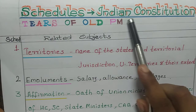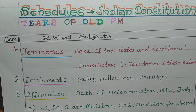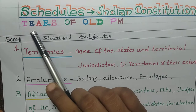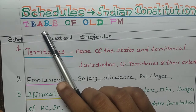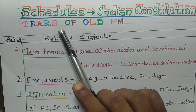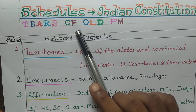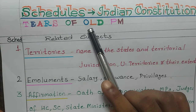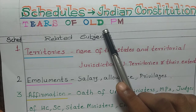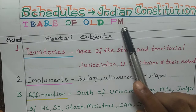Schedules of Indian constitution. Here is our quote: 'Tears of Old PM.' T indicates territories, E emoluments, A affirmation, R Rajya Sabha, S scheduled areas, O other areas, F federal system, O official languages, L land reforms, D defection, P panchayats, and M municipalities.